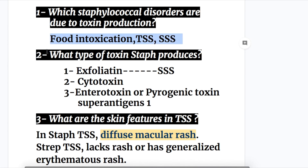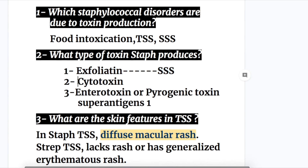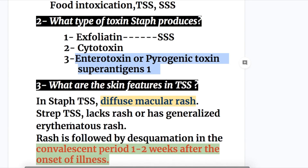Question two: What type of toxins does Staph produce? It produces three types of toxins: exfoliatin, which causes scalded skin syndrome; cytotoxin; and enterotoxin and/or a related pyrogenic toxin superantigen 1.